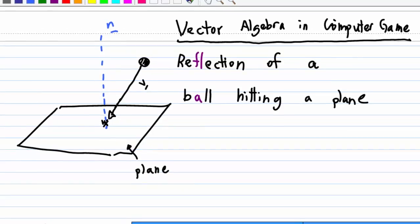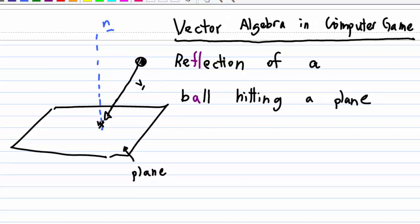In order to find the direction of the reflected ball, I have redrawn the diagram again. So this is a ball approaching the plane with velocity v. At the point of contact, the ball will be reflected.